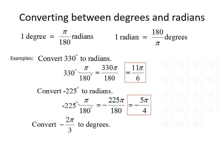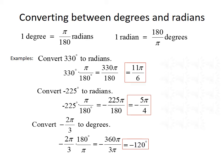Now let's go the other way and convert negative 2π over 3 radians into degrees. We start with negative 2π over 3 radians and multiply by 180 over π. That gives us negative 360π over 3. Pi cancels from both numerator and denominator, and negative 360 divided by 3 gives us negative 120 degrees.